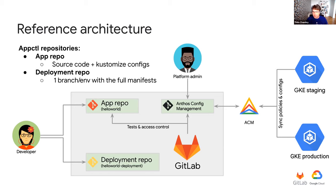Enforce Config Management reads configs and policies from a Git repository hosted in your GitLab instance and applies those to your Anthos cluster or your Google Kubernetes Engine clusters. The main people interacting with the Enforce Config Management repository are the platform administrators. They're going to be able to approve merge requests from developers, from the security team, etc. Enforce Config Management handles GitOps for config and policies, and AppCTL handles GitOps for applications.